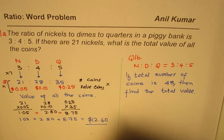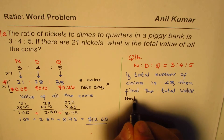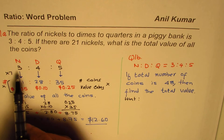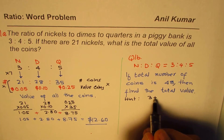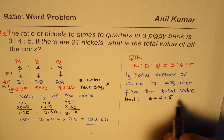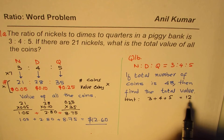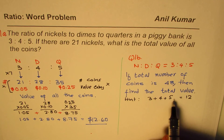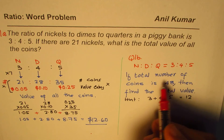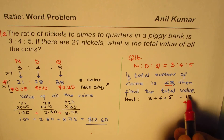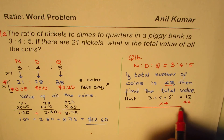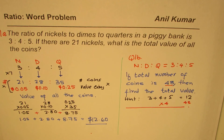Here is a hint. When you're given a ratio, add them up. We have 3 is to 4 is to 5, so we add 3 plus 4 plus 5, which gives us 12. So the base total number of coins is 12. The total number of coins given is 48, not 12 — so the multiplier is 4. That is the hint that will help you find the total value.